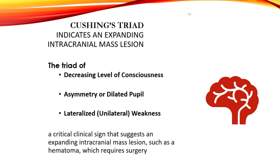Cushing triad is a classic clinical finding that requires surgery. The patient's level of consciousness deteriorates, often progressing from alertness to drowsiness, confusion, and eventually coma. The presence of an asymmetric or dilated pupil, typically on one side, is known as anisocoria, indicating pressure on the oculomotor nerve, cranial nerve 3. The affected pupil often fails to constrict in response to light. Weakness or paralysis on one side of the body is typically on the opposite side of the dilated pupil due to compression of motor pathways such as the corticospinal tract.